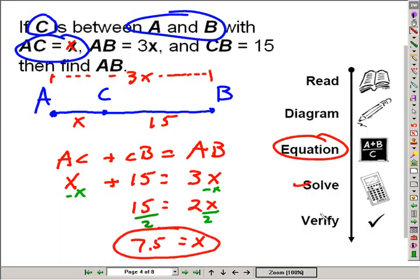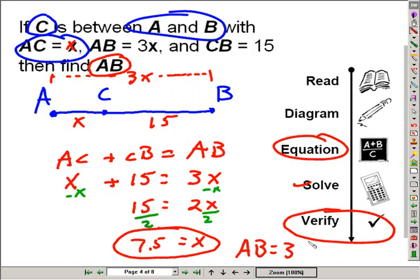No, we're not done. We solved, but let's verify that we answered the question. The question is AB. AB is equal to 3 times X. So, AB is equal to 3 times 7.5, which is obviously a quick 22.5.